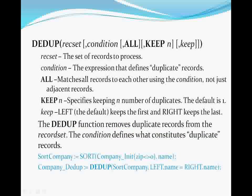The DEDUPE function does exactly what it sounds like — it gets rid of duplicate records based on your logical condition defining what constitutes a duplicate. A simple DEDUPE will only check contiguous records, so you must have sorted the input record set so that the duplicate records are contiguous. But if there's no way to sort the records so that all the duplicates are always contiguous, that's why DEDUPE also has an ALL option, which specifies matching all possible commutative pairs of records.